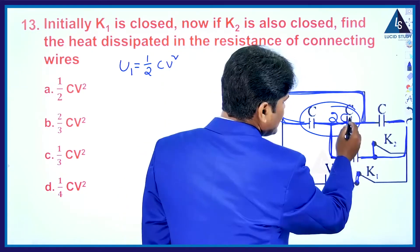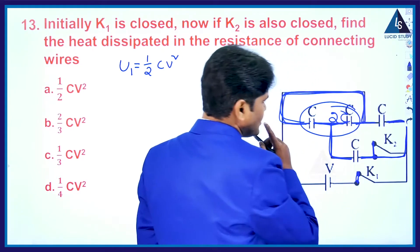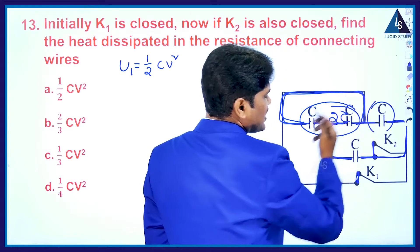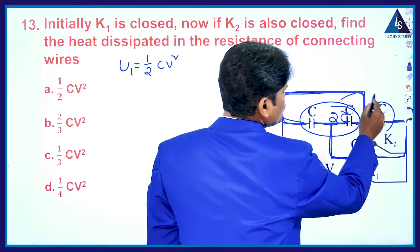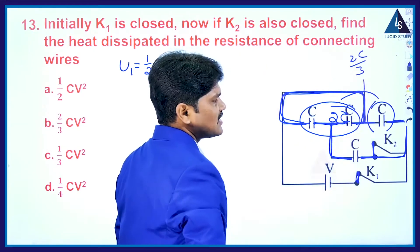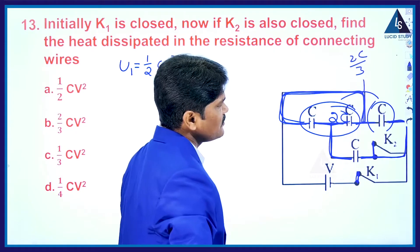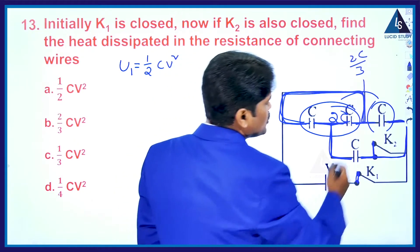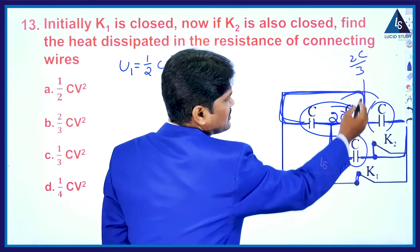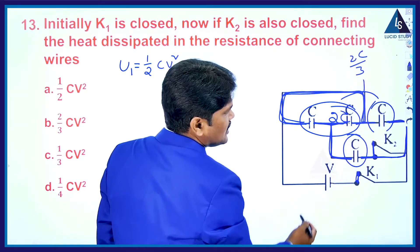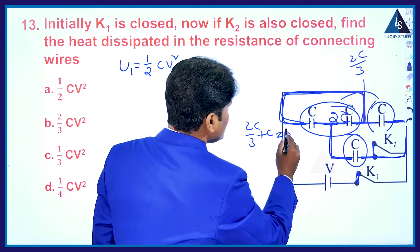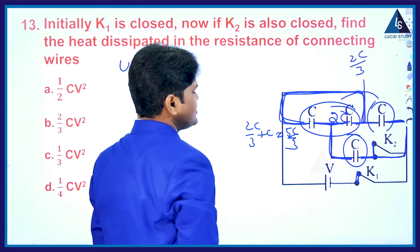This 2C is in series with another C. When 2C and C are in series, their effective capacitance is 2C/3. This 2C/3 is then in parallel with C, giving 2C/3 + C = 5C/3. So the total effective capacitance when both keys are closed is 5C/3.